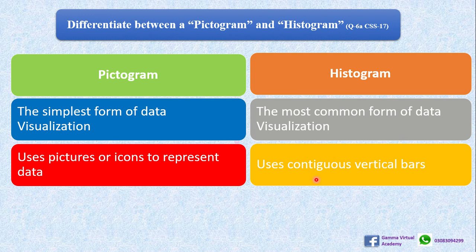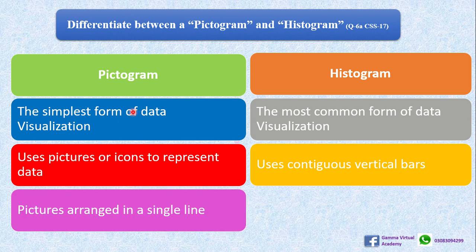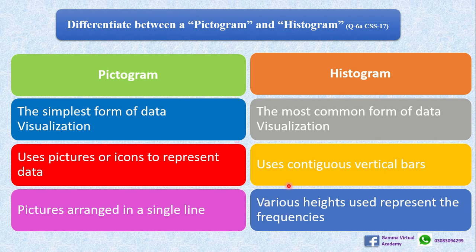A histogram uses vertical bars which are contiguous — meaning adjacent to each other. A pictogram uses single lines on which icons or pictures are arranged. In a histogram, various heights of bars representing the frequencies are used.